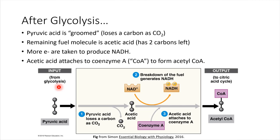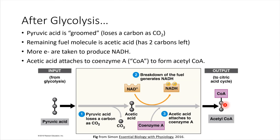After glycolysis, each pyruvic acid molecule gets 'groomed' — the same idea as a dog getting a trim or a haircut. What happens is one carbon atom gets trimmed off; pyruvic acid loses a carbon, and that carbon leaves in the form of CO₂. That's one of our waste products from cellular respiration. This brings us down to a molecule with just two carbons left, called acetic acid. We also make another molecule of NADH, which picks up some electrons from acetic acid. Acetic acid then gets attached to a molecule called coenzyme A, which acts as an escort to carry it off to the next part of the cycle.